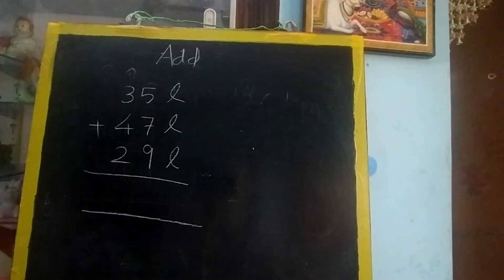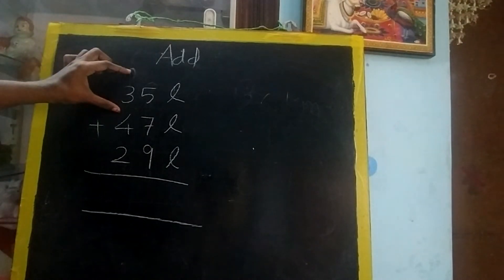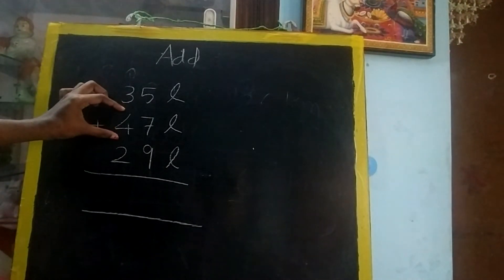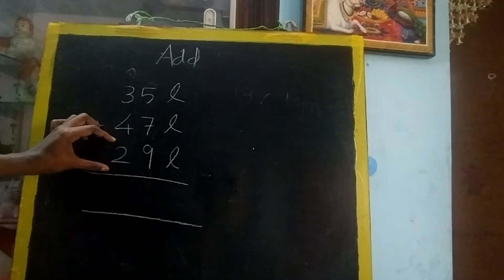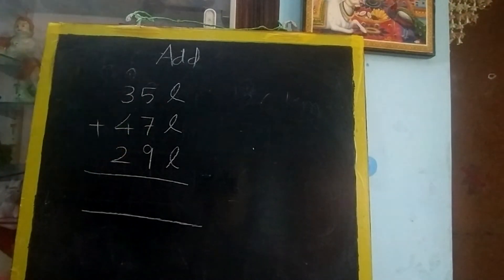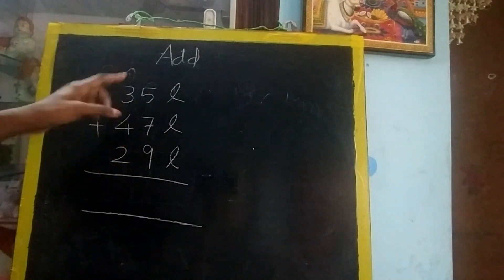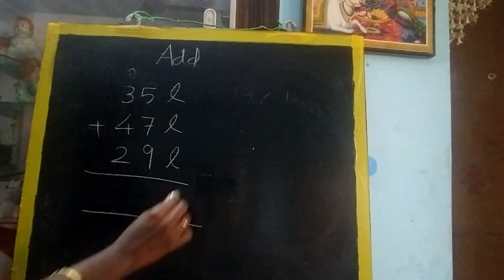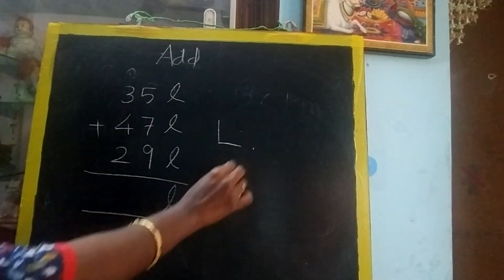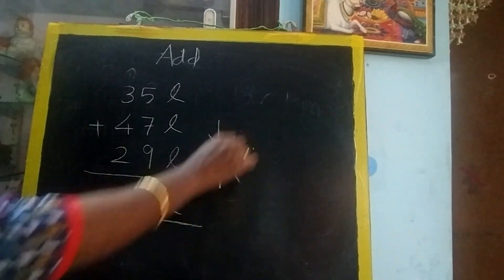Now you see there is a sum. Like one milkman has 35 liters of milk, second milkman has 47 liters of milk, and third milkman has 29 liters of milk. So what is the total liters? So what you have to do? You have to add liters. You have to write like this only. Not like this. Or not like this. This is wrong. Okay.